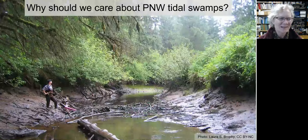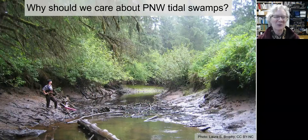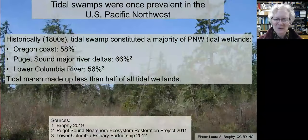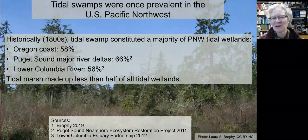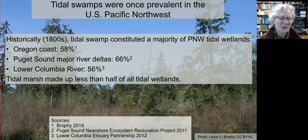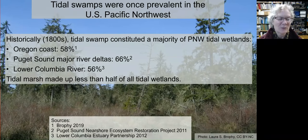So all these detailed data are very interesting, but why should we care? In most Pacific Northwest estuaries, tidal swamps historically made up a majority of our tidal wetlands. On the Oregon coast, 58% of our tidal wetlands during the 1800s were tidal swamps. In Puget Sound, two-thirds, and in the lower Columbia, 56% of tidal wetlands as a whole were tidal swamps. That means tidal marsh made up less than half of our tidal wetlands.